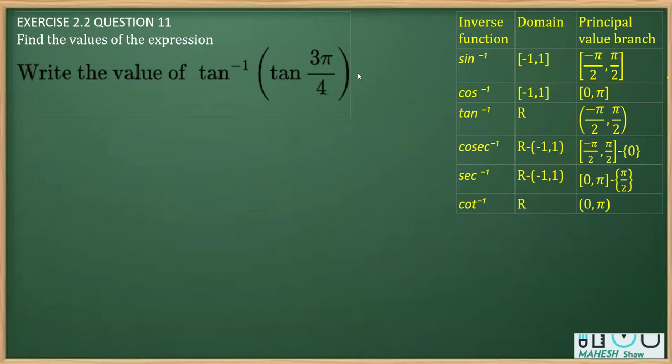So what we should do is split this angle. For example, we first write the question: tan inverse tan 3π by 4. Now what I'm going to do is write this angle within the range of its principal value. So I can write 3π by 4 as π minus π by 4.